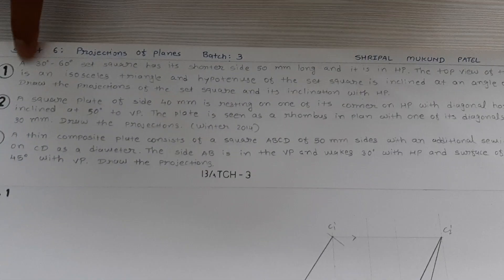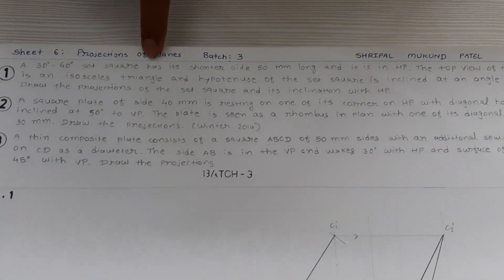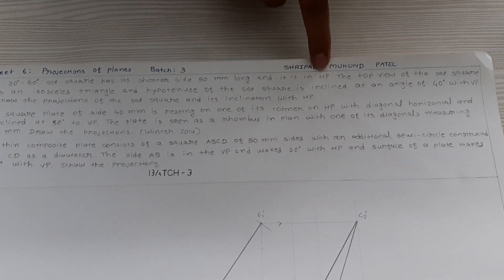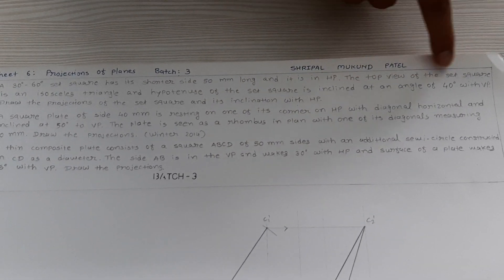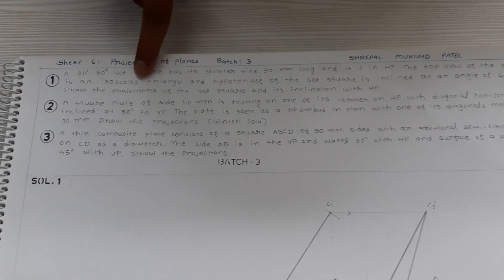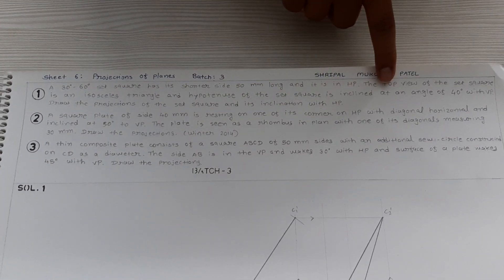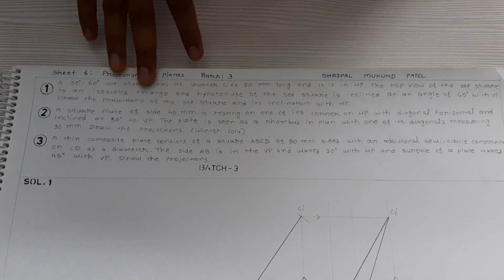Hello viewers. In this video I am going to explain a problem of projection of plane in which a 30-60 set square is given. A 30-60 set square has its shorter side 50mm long and it is in HP. The top view of the set square is an isosceles triangle and the hypotenuse of the set square is inclined at an angle of 40 degrees with VP. Draw the projections.